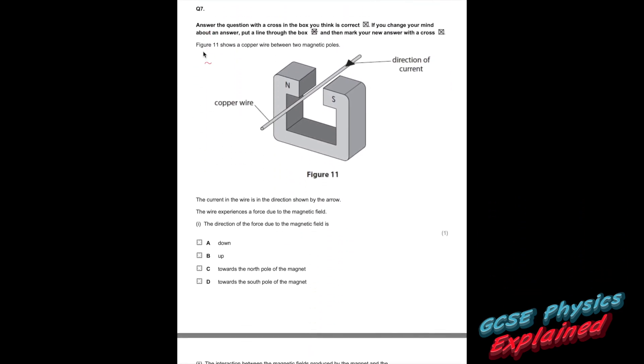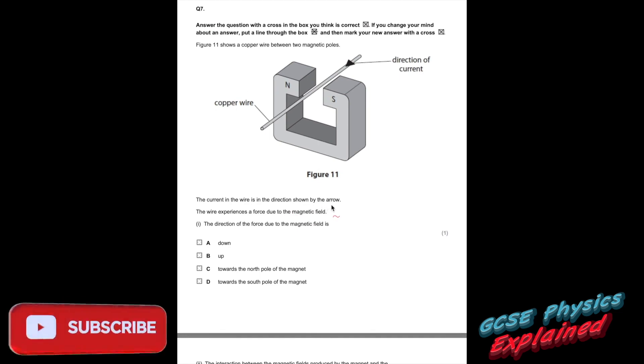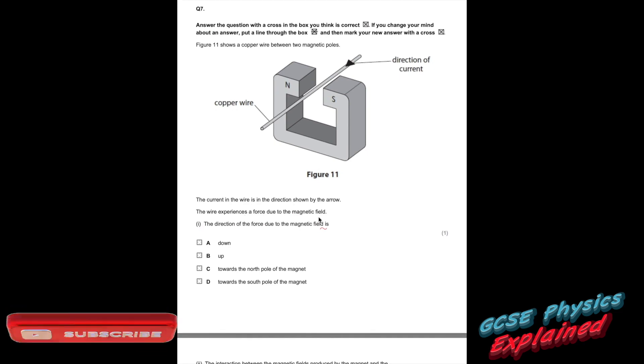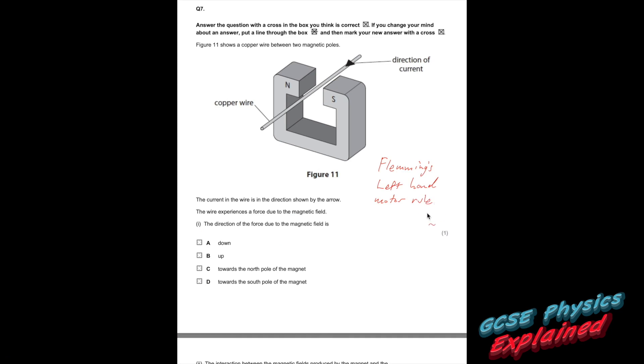Question seven. Figure 11 shows a copper wire between two magnetic poles. The current in the wire is in the direction shown by the arrow. The wire experiences a force due to the magnetic field. The direction of the force due to the magnetic field is... Right, this is Fleming's left-hand rule. It's called a motor rule, because a motor makes things move.